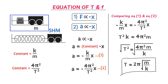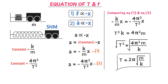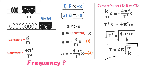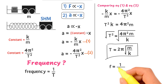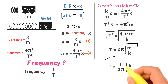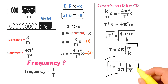Thus, the time period of this spring is T = 2π√(M/K). For the frequency of this mass, we know that frequency equals the reciprocal of time period. Taking the reciprocal gives: f = (1/2π)·√(K/M). This is the frequency of a mass attached to an elastic spring.